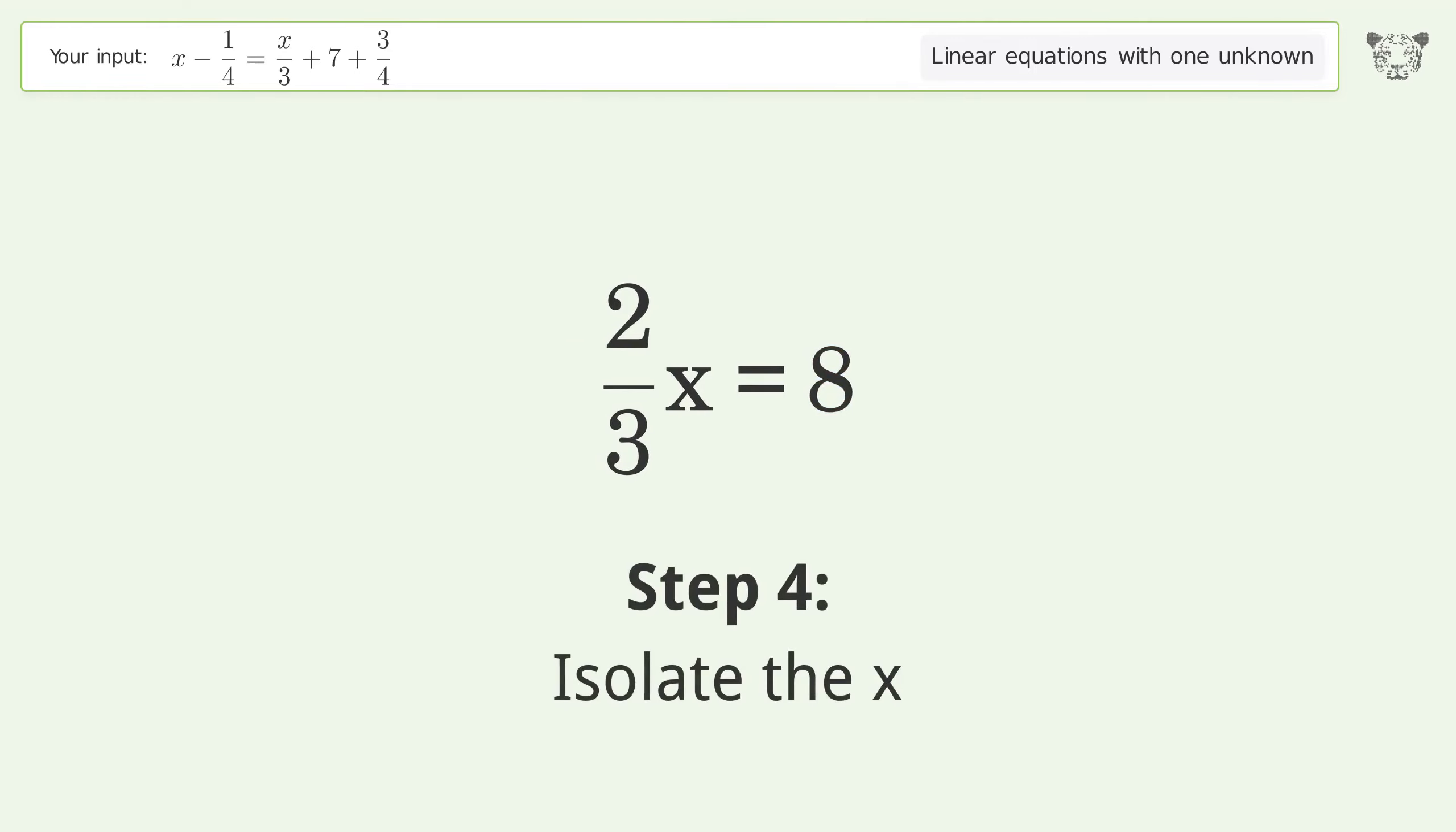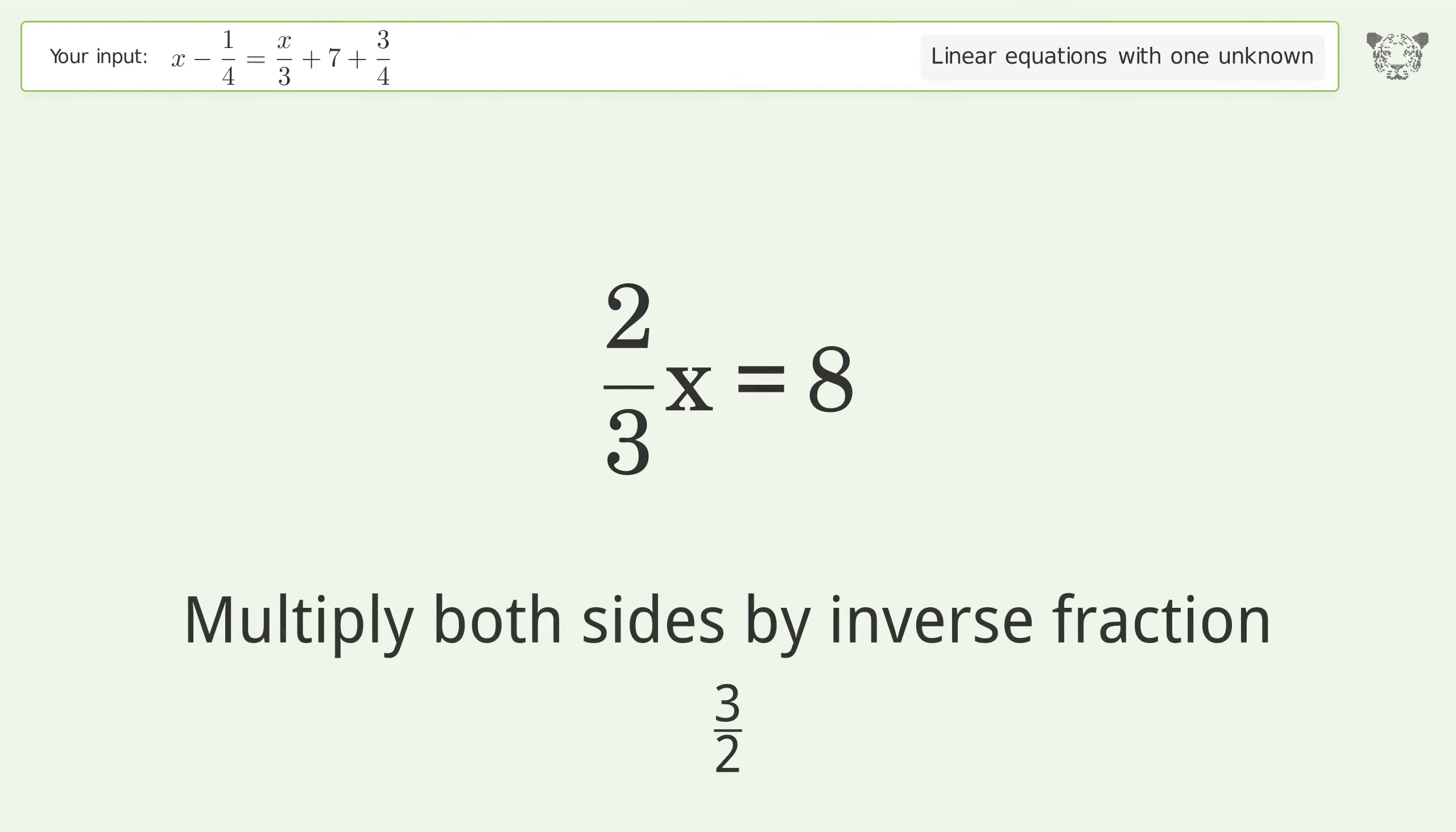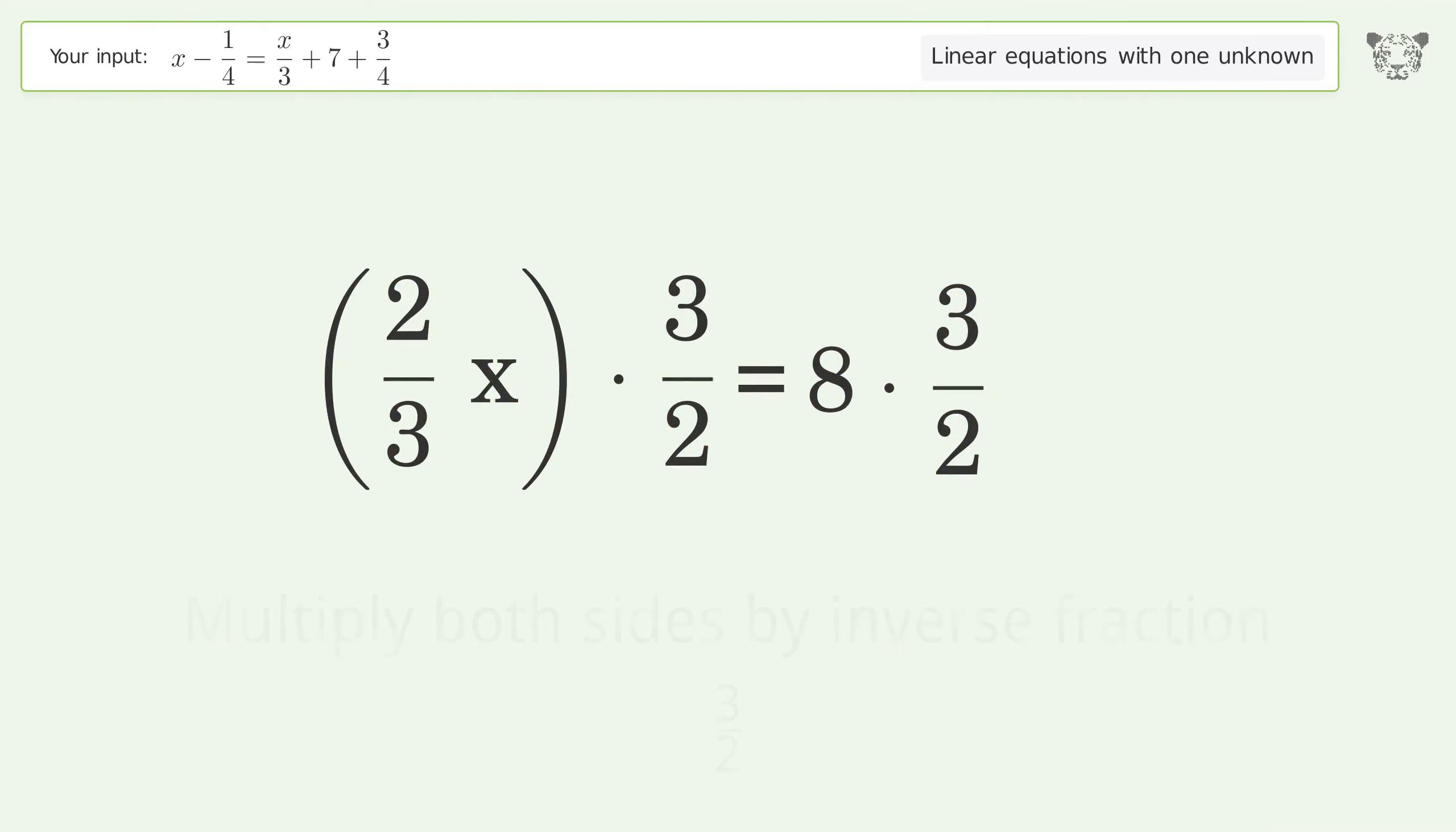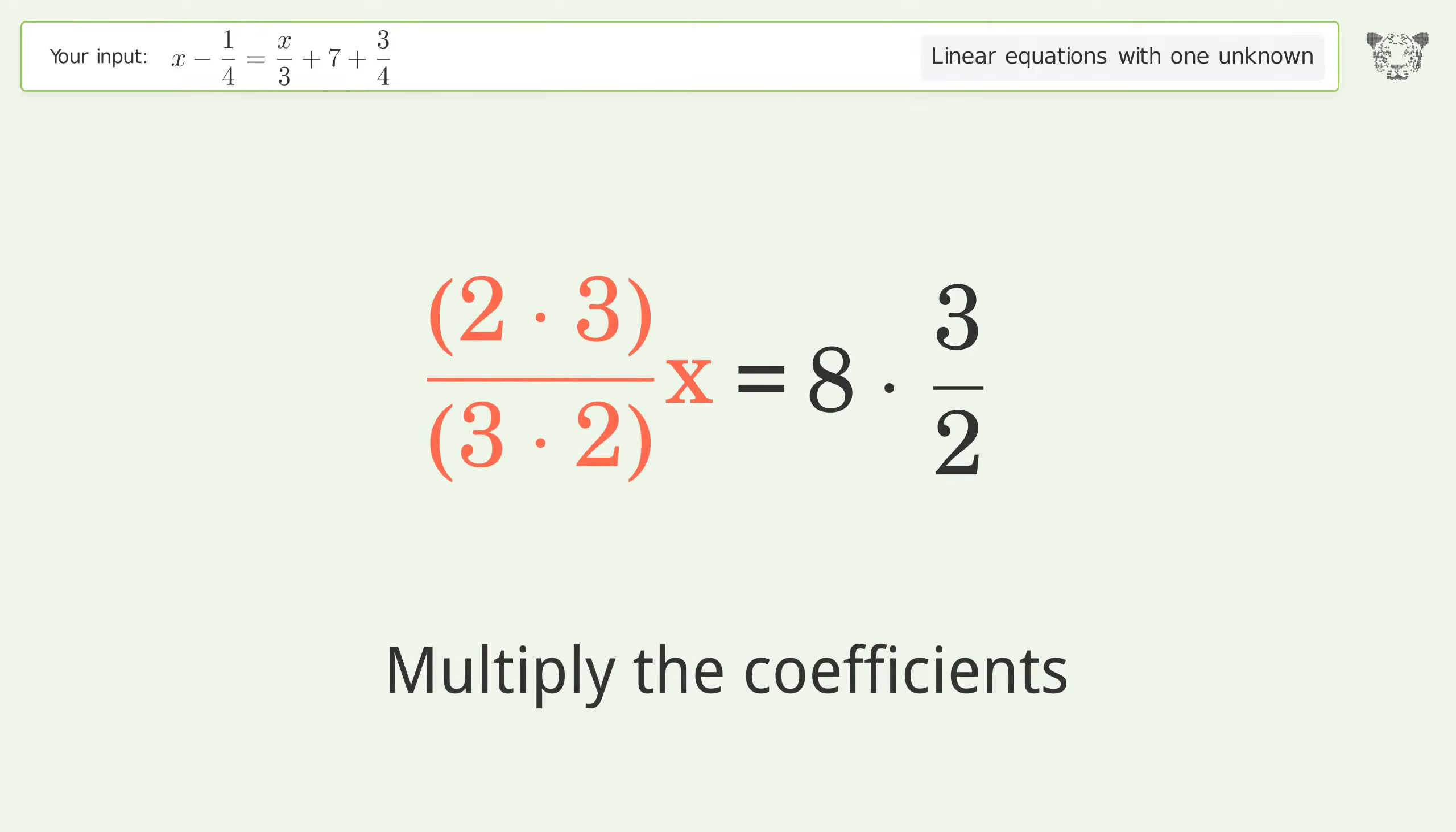Isolate the x. Multiply both sides by the inverse fraction 3 over 2. Group like terms. Multiply the coefficients. Simplify the fraction.